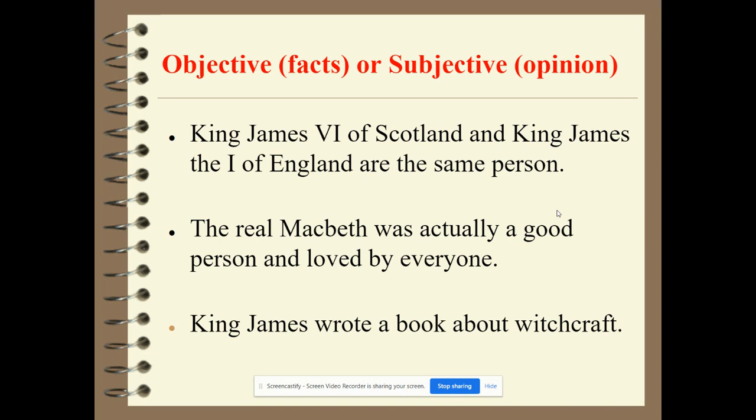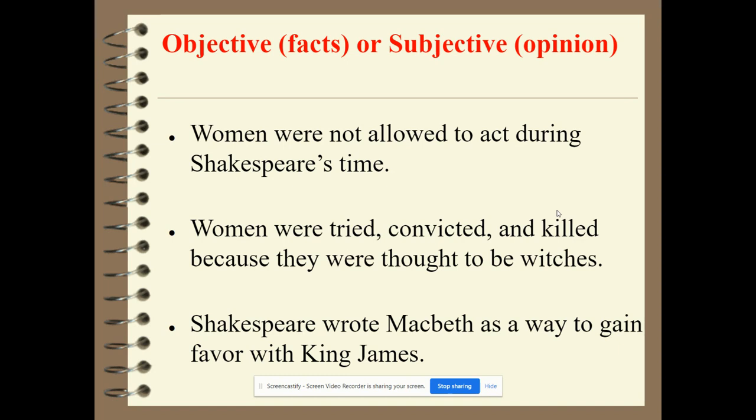'King James wrote a book about witchcraft' — that is factual, objective. King James believed there was a coven of witches out to get him, and Shakespeare in writing Macbeth was trying to appeal to King James in some ways. King James wrote a book called Demonology about witchcraft. During Shakespeare's time, women were not allowed to act — that's objective, a fact. Women were tried, convicted, and killed for being thought to be witches — also a fact. 'Shakespeare wrote Macbeth to gain favor with King James' — that's an opinion.